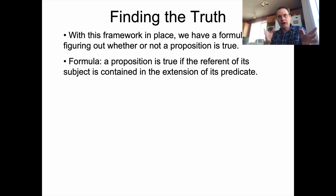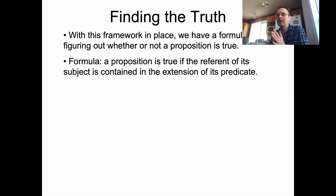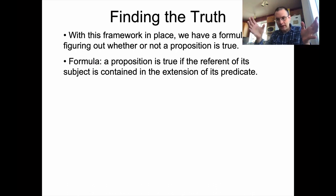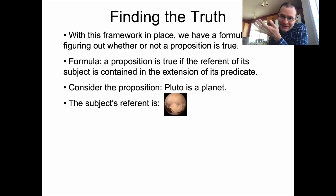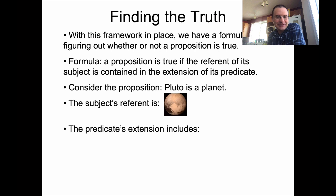We're breaking our sentences down syntactically into subjects and predicates — the noun phrase and the verb phrase part. And then we can think of their meaning in terms of the actual things in the world that they pick out. So we can talk about Pluto — we have a proposition: Pluto is a planet. The subject's referent is this — we now know a little bit better what it looks like after the New Horizons spacecraft flew past it a few years ago.